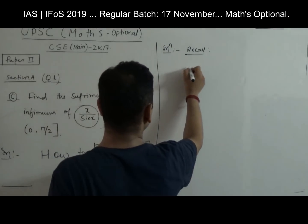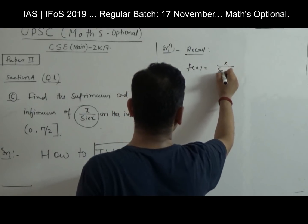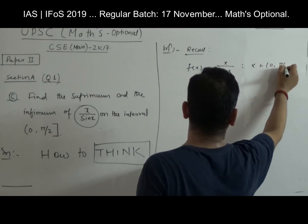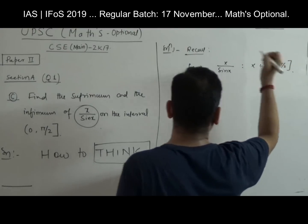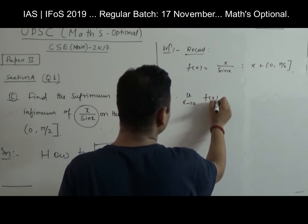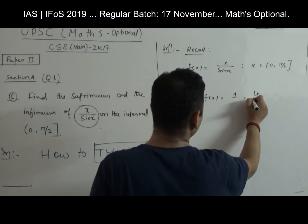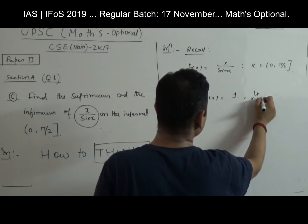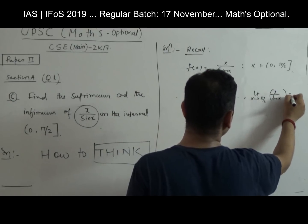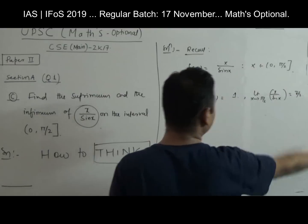My function is f(x) = x/sin(x), where x belongs to (0, π/2]. Just look at the limits: as x tends to 0, x/sin(x) gives 0/0 form, which equals 1. The limiting value as x tends to π/2 gives x/sin(x) = (π/2)/1 = π/2.